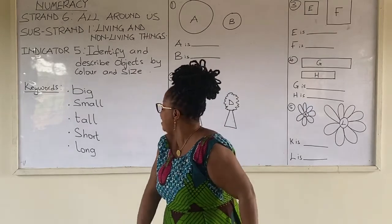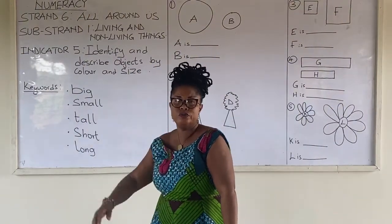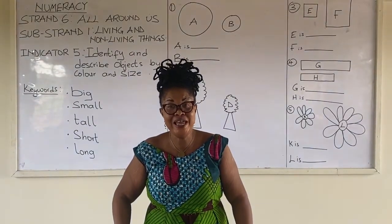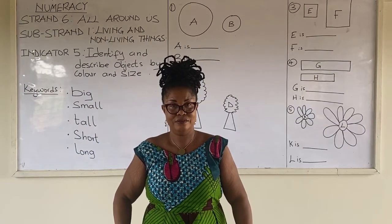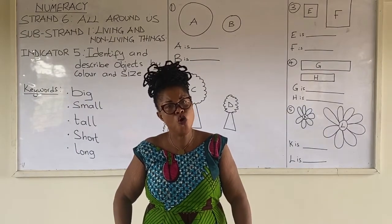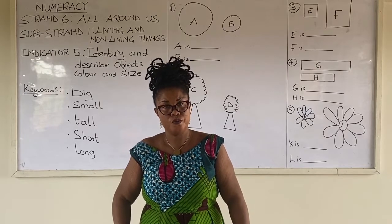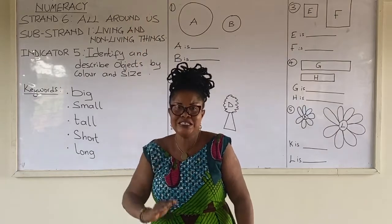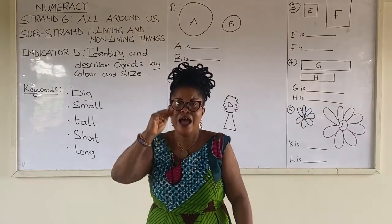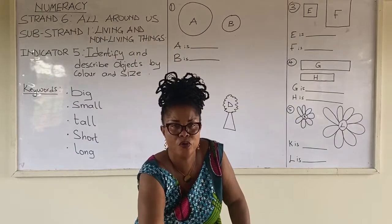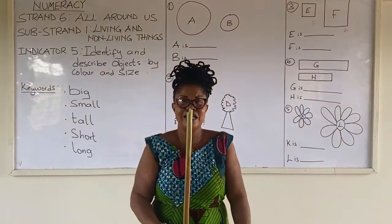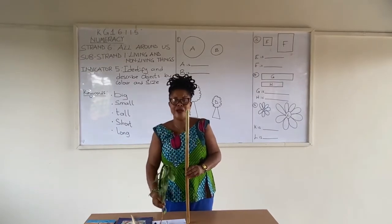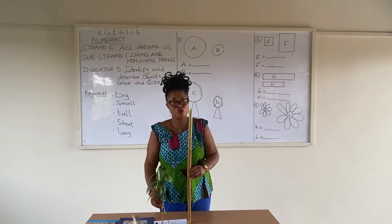Let's look at the key word: tall. Tall is mostly used for living things, though some objects also use tall. When something is standing upright — for example, when this stick is standing upright, or when this plant is standing upright — we use the word tall.